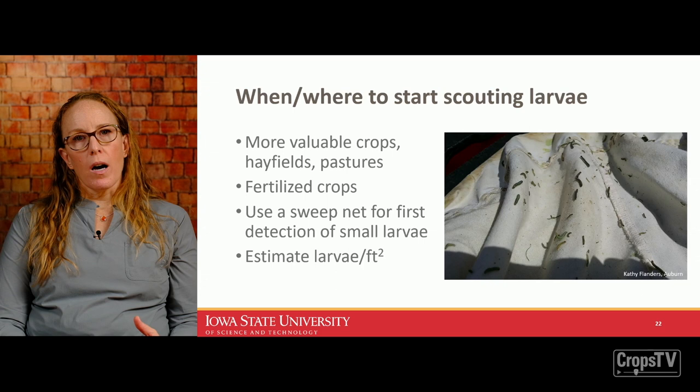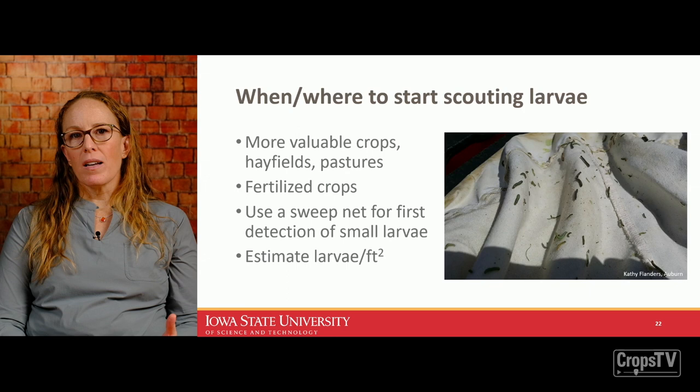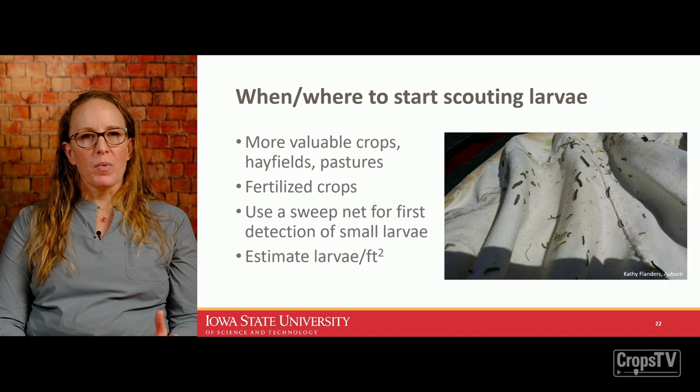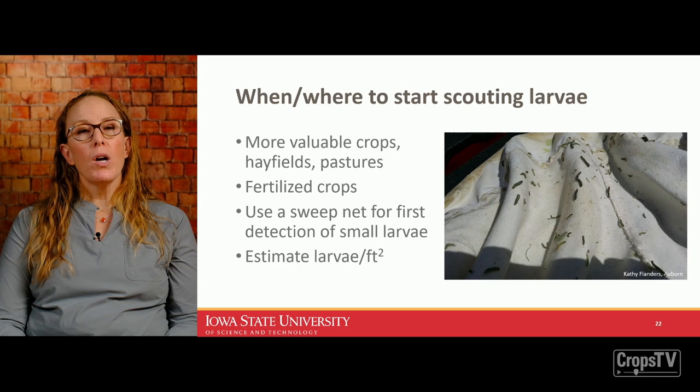Whatever method you're using — sweep net or looking at injured plants — estimate activity by larvae per square foot whenever possible. Approximately one sweep covers three linear feet, so count larvae per sweep over roughly 20 sweeps, and walk away with a density number from every scouting effort.